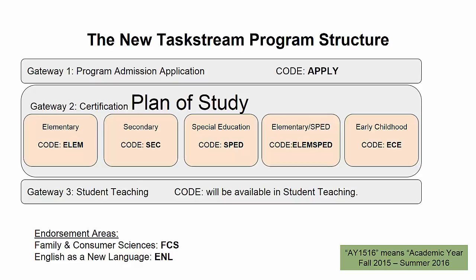Gateway 2 is your plan of study. You will also find all the requirements to apply for student teaching listed here. If you're in the Family Consumer Sciences or English as a New Language endorsement areas, please enroll in your additional codes as you see listed.